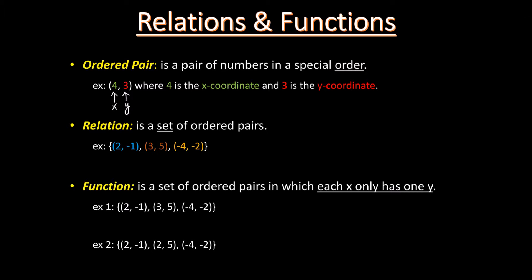The second definition is relation. It's a set of ordered pairs. We normally use curly braces to represent a set. Since a relation is a set of ordered pairs, we put several ordered pairs inside the curly braces. For example, here we have a relation with three ordered pairs: (2,1) is the first, (3,5) is the second, and (4,2) is the third ordered pair.